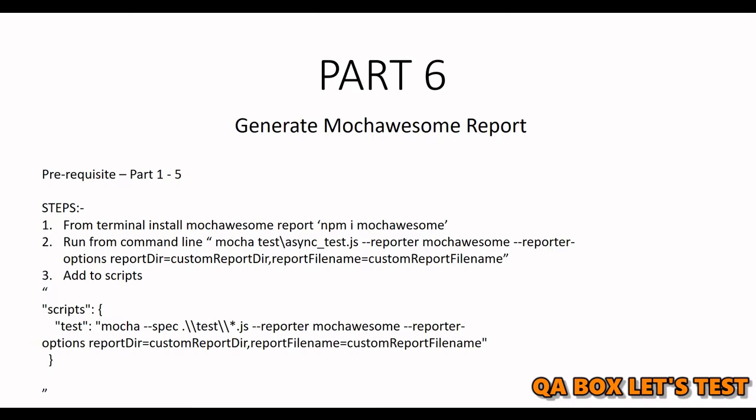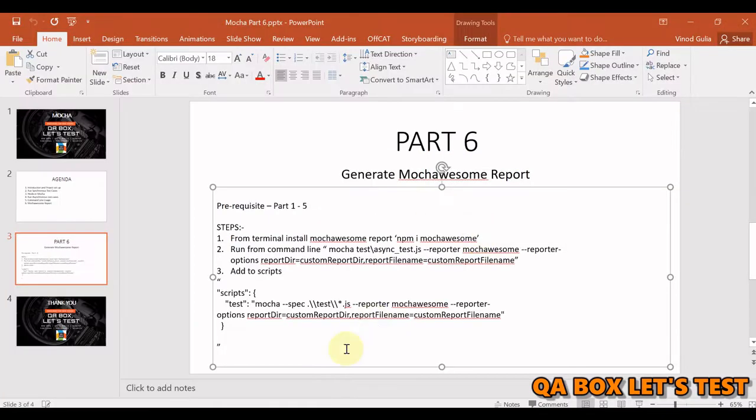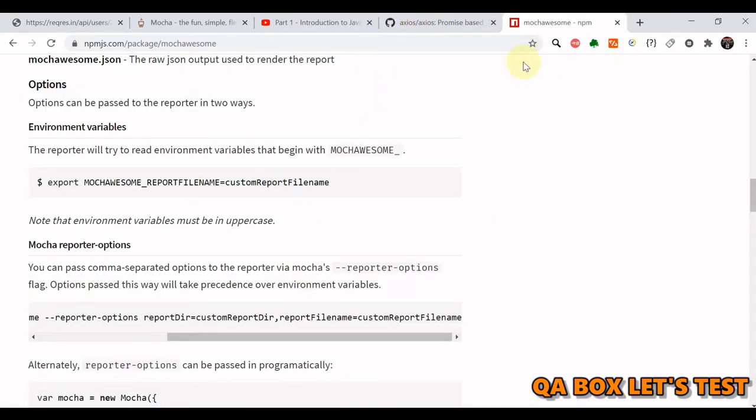In the last video we changed the default reporting to dot reporting. In this video we are going to use an external library which is by far the most used library to generate reports from Mocha, and the name of the report is mocha-awesome. You have to install it via the command: npm i mochawesome.